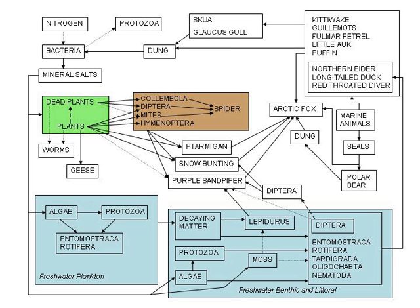An unexpected emergent property of a complex system may be a result of the interplay of cause and effect among simpler, integrated parts — see Biological Organization. Biological systems manifest many important examples of emergent properties in the complex interplay of components. Traditional study of biological systems requires reductive methods in which quantities of data are gathered by category, such as concentration over time in response to a certain stimulus.